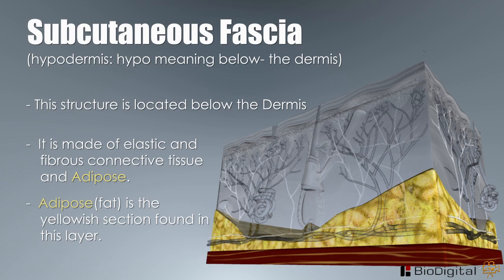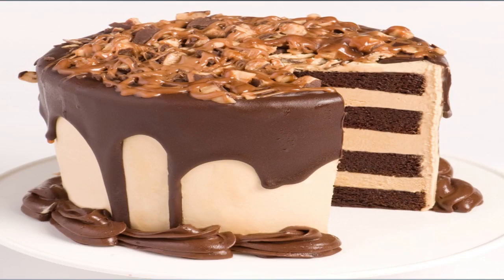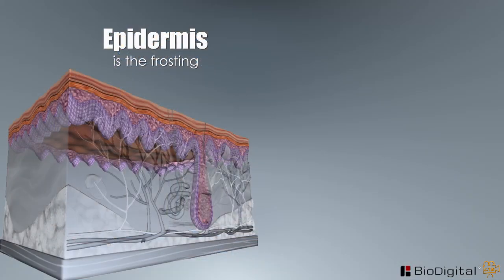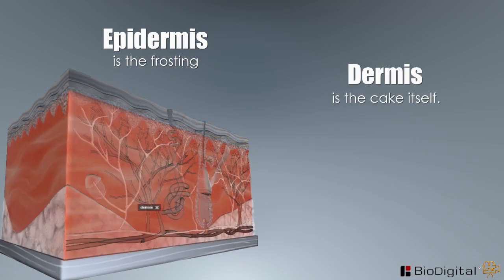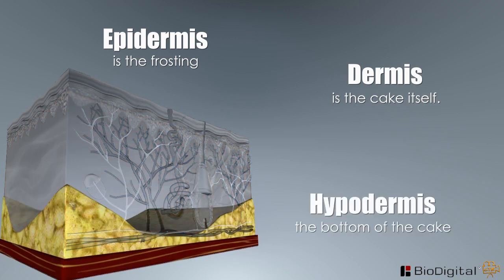We can compare our skin to a piece of cake. The epidermis is the frosting. The dermis is the cake itself. And the subcutaneous fascia, or hypodermis, is the bottom of the cake connecting to the pan.